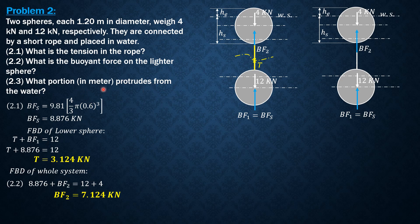Then, what portion in meter protrudes from the water? We are asked to solve for h sub e here in meter, the portion of the sphere that protrudes from the water, or this height here.